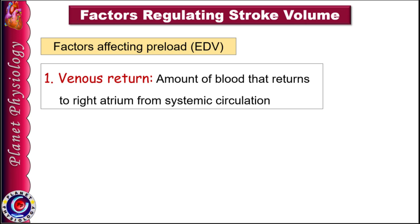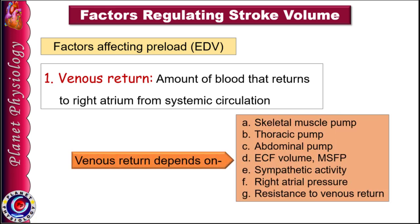Venous return is the amount of blood that returns to the right atrium from systemic circulation. It depends on various factors like skeletal muscle pump, thoracic pump, abdominal pump, extracellular fluid volume and mean systemic filling pressure, sympathetic activity, right atrial pressure, and resistance to venous return. A brief explanation of each of these factors is an essential part of your answer on regulation of cardiac output.